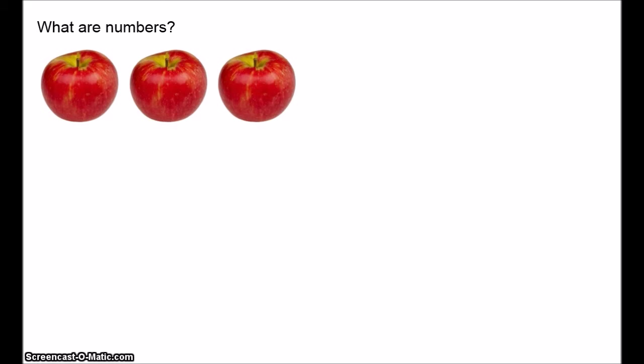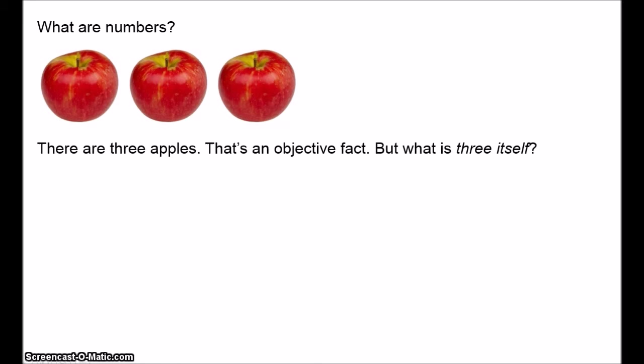We might say, well look, here are three apples — that's an objective fact. Well, they're not actually apples, they're pictures, but you get the point. But this still leaves us with the question: what is three itself? We have three apples, so in some sense maybe three is in the world, but what is three? I can have three apples, three oranges, three cars, three whatever — but what's three just in itself? On the one hand, we seem to treat three as if it's an object, an abstract object with certain properties.